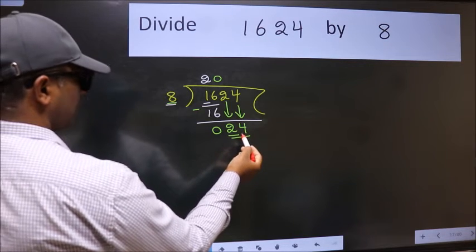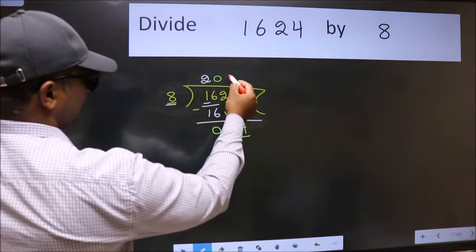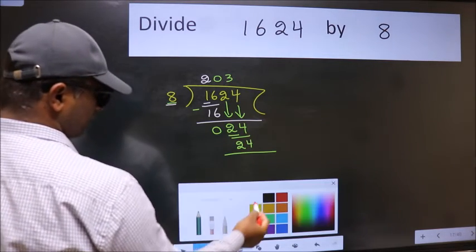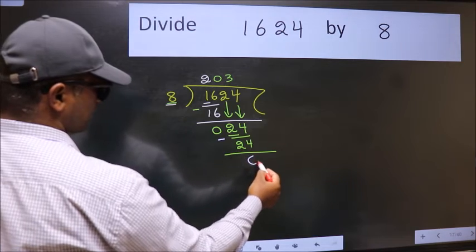So, 24. When do we get 24 in the 8 table? 8 times 3 is 24. Now, we subtract. We get 0.